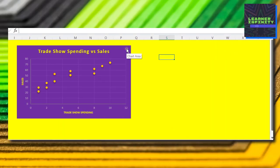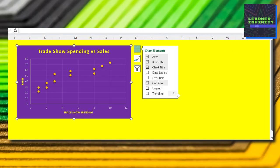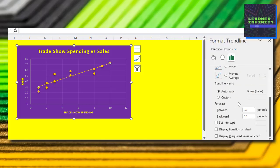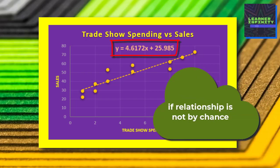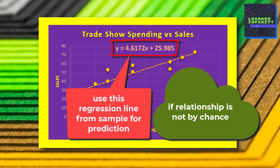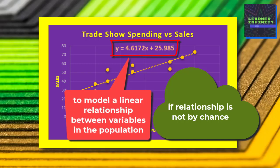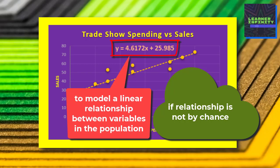Here is the scatter plot. From the scatter plot, we can obtain the regression line or line of best fit. The regression equation will be y is equal to 4.6172x plus 25.985. If we believe that this relationship obtained from a sample is not a result of coincidence or chance, we will likely use this regression line from sample data for prediction or to model a linear relationship between variables in the population.